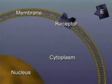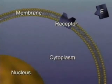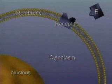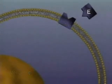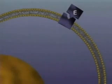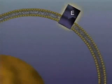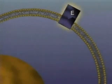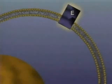For example, epinephrine from the adrenal medulla binds to a receptor on the membrane of a liver cell. Epinephrine's effect on this cell will be the breakdown of glycogen to glucose. The binding of epinephrine to the receptor